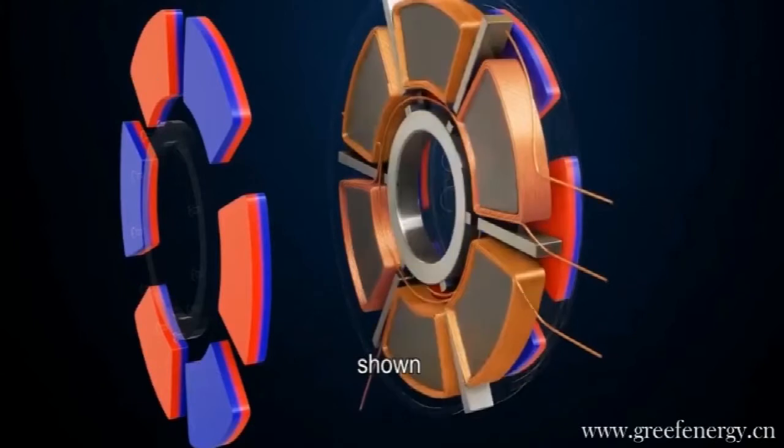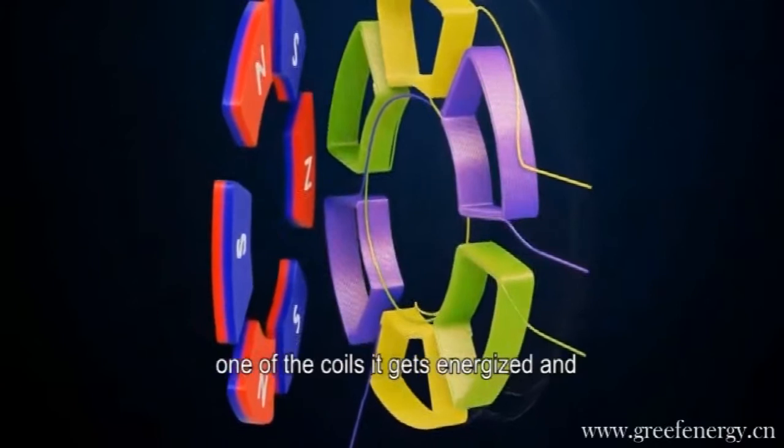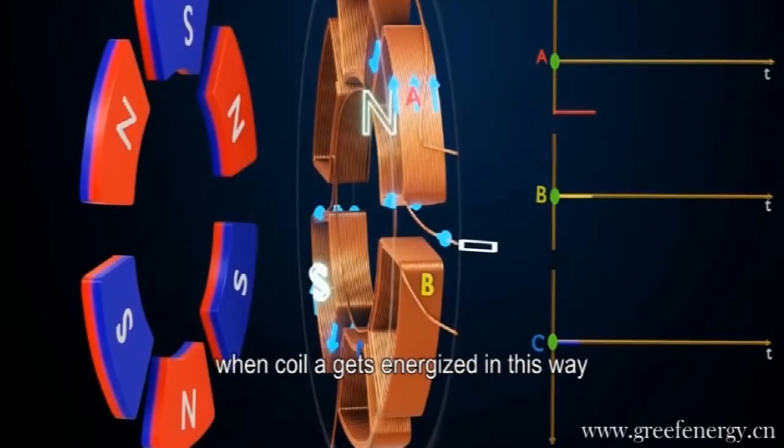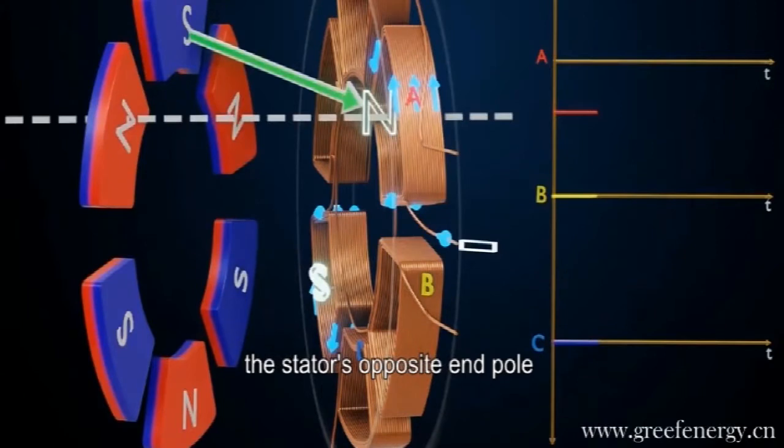Here, the motor's coil arrangement is shown. When a direct current supply is given to one of the coils, it gets energized and becomes an electromagnet. When coil A gets energized in this way, the S-pole of the rotor is attracted to the stator's opposite N-pole.